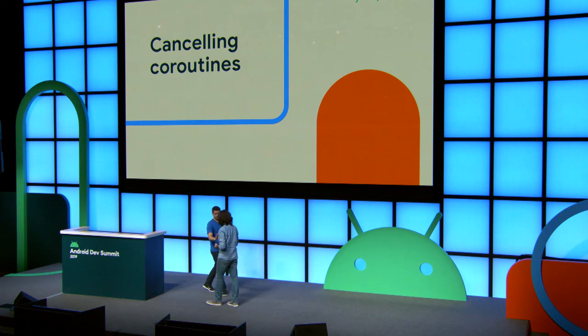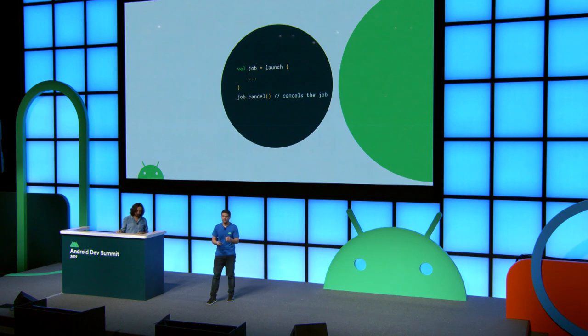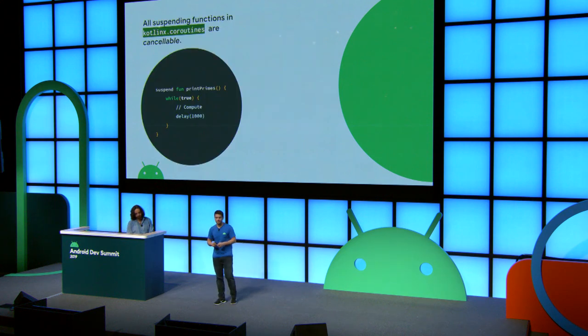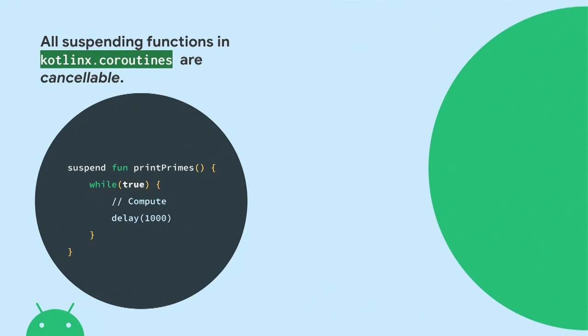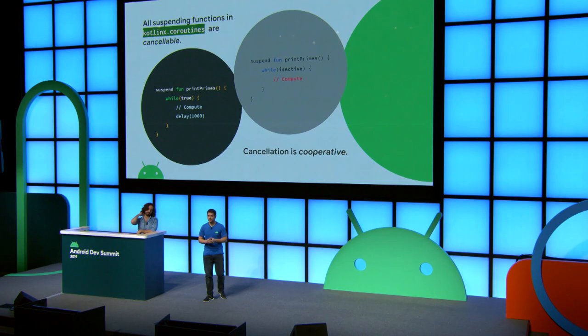So how do we cancel coroutines? We've been talking about scoping our coroutines so that cancellation is done automatically. What I want to point out is what happens if you are designing a suspend function that has an infinite loop — how does Kotlin know when to stop that loop? It turns out all suspending functions in Kotlin Coroutines are cancelable, and delay is one of them. So when delay is called, it checks if the coroutine is canceled and stops execution. But if you're not calling any cancelable functions in your suspend function, you have to cooperate. We say that cancellation is cooperative — you have to check if the coroutine is active regularly with the isActive property.